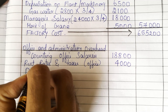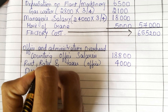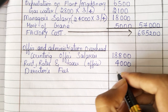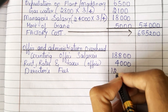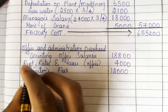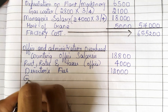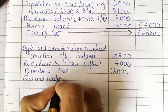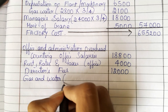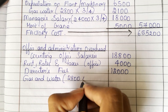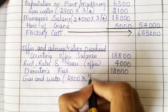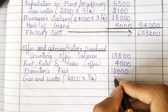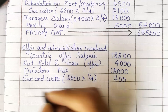Then we are having director's fees: 12,000. Then we are having gas and water — total gas and water is 2,800, but for office overhead it is only one-fourth. When we multiply that, we will get 700.